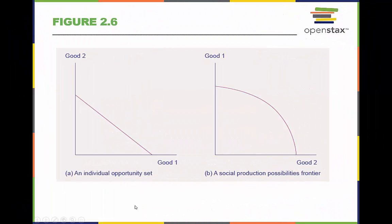Both the individual opportunity set, or budget constraint discussed previously, and society's production possibilities frontier show the constraints under which individual consumers and society as a whole operate.